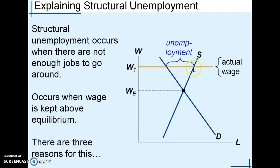Some type of restriction that keeps wage above equilibrium will create unemployment. As long as the restriction — like minimum wage law, unions, or efficiency wages — is in place, the wage stays above equilibrium and you'll have a long-run surplus. Normally price would go down to equilibrium, but something prevents it from going down.